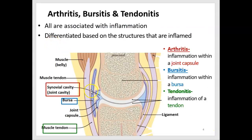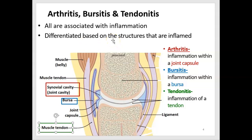The other three disorders — arthritis, bursitis, and tendinitis — are all inflammations of structures associated with the skeletal system. The suffix 'itis' means inflammation of. They differ in cause but also in location, so we'll first focus on the anatomy.